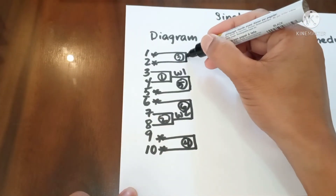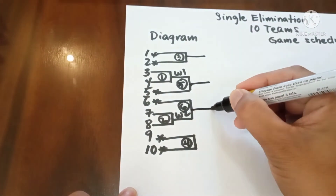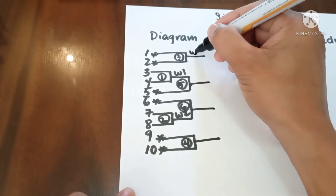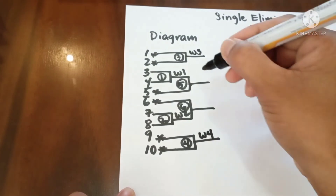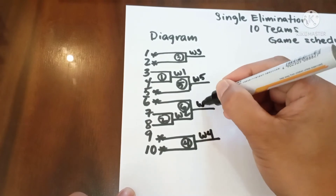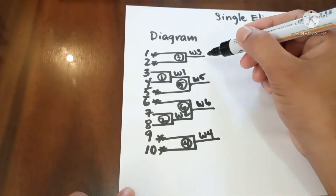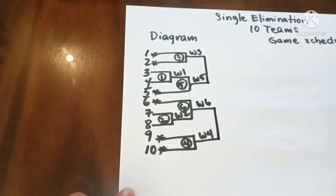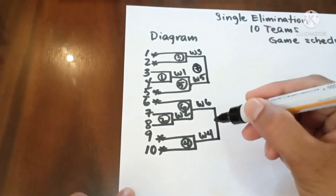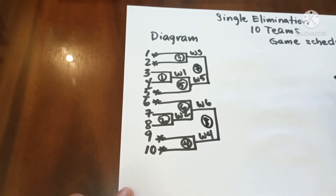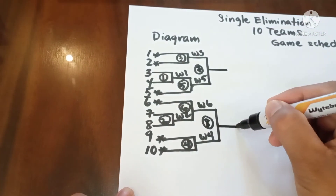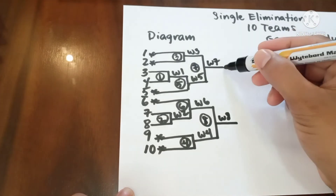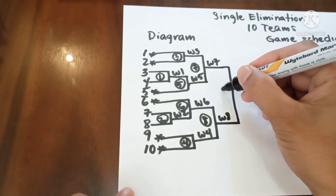Now let us have the result: winner 3, winner 4, winner 5, winner 6. Now let us have the vertical line again from the top. This will be game 7, this will be game 8. Now let us have the result: winner 7, winner 8. Now the final game, game 9.